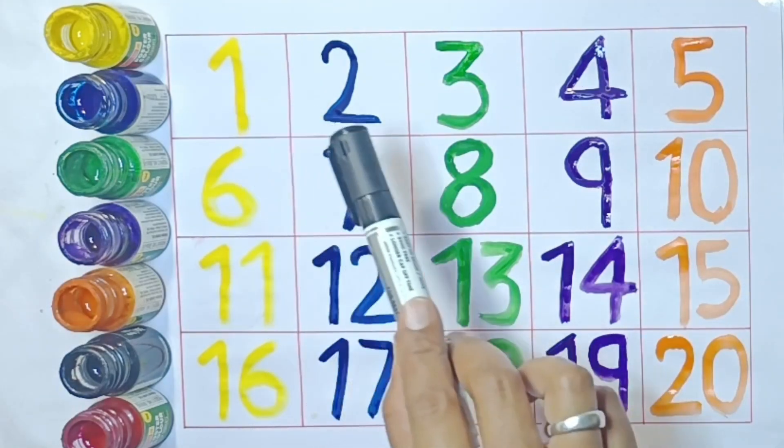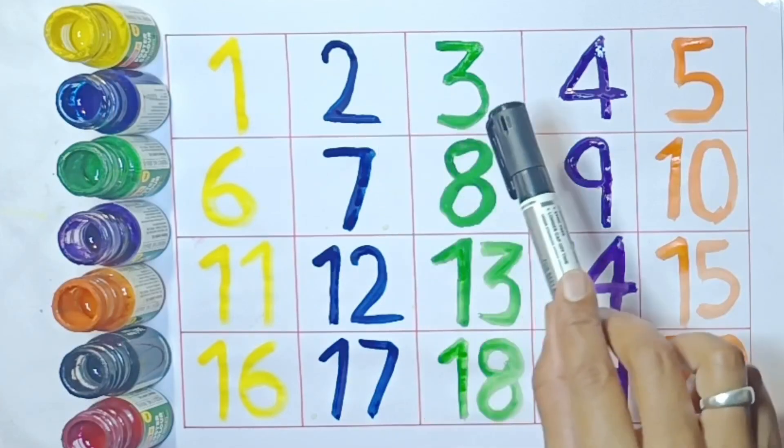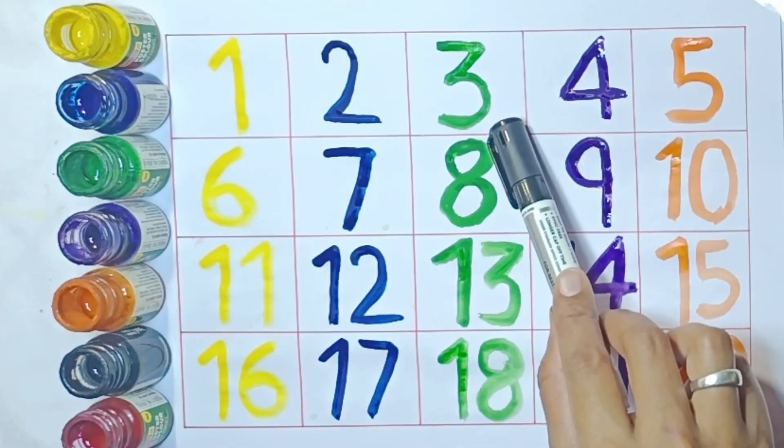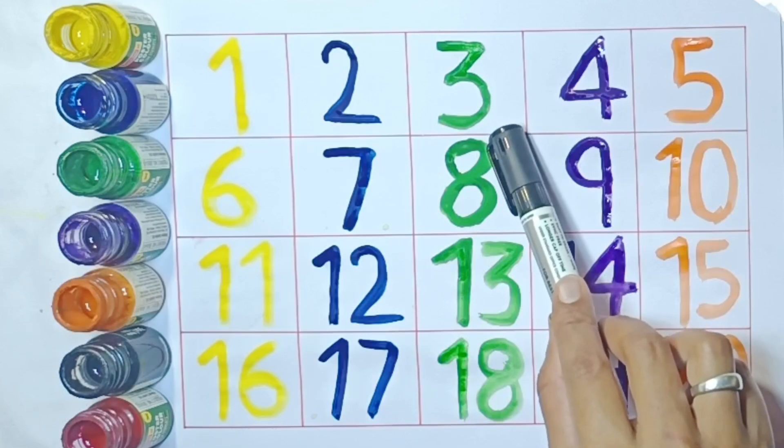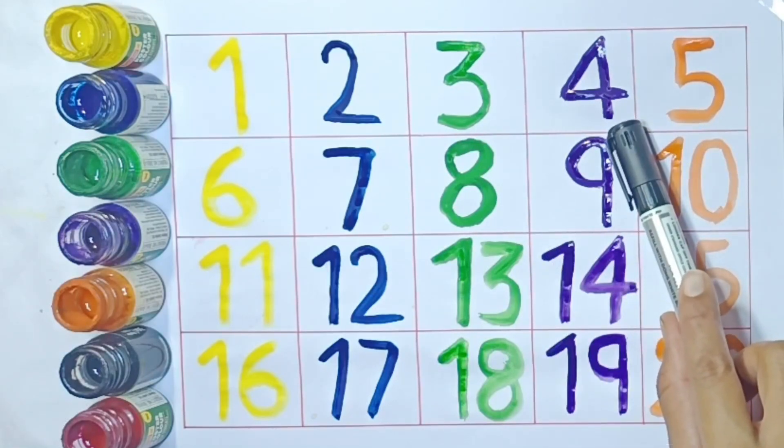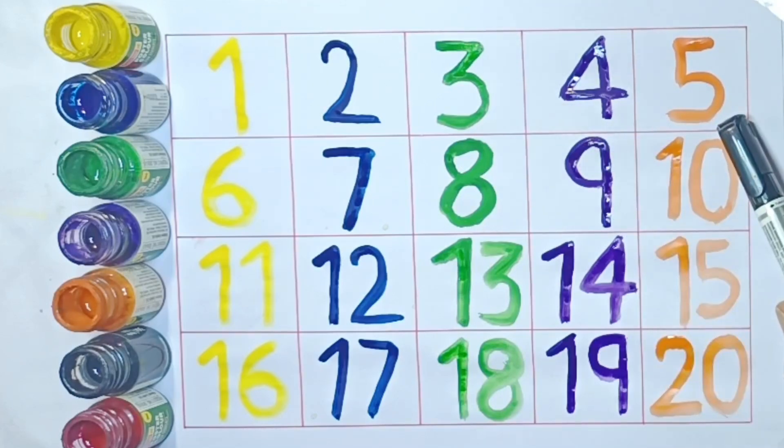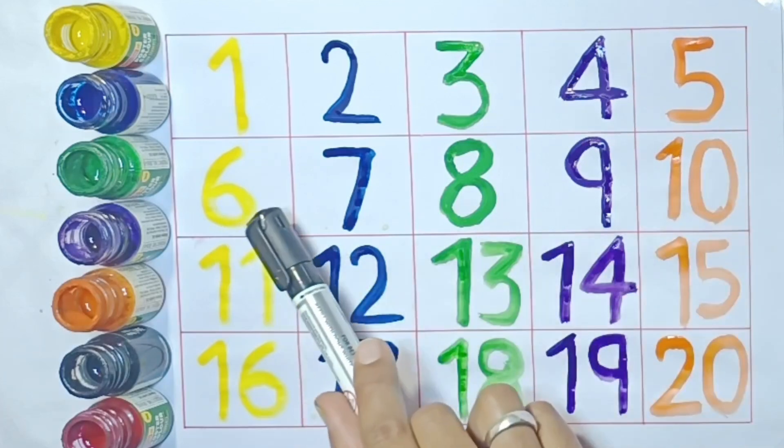1. O-N-E-1. 2. T-W-O-2. 3. T-H-R-E-E-3. 4. F-O-U-R-4. 5. F-I-V-E-5.